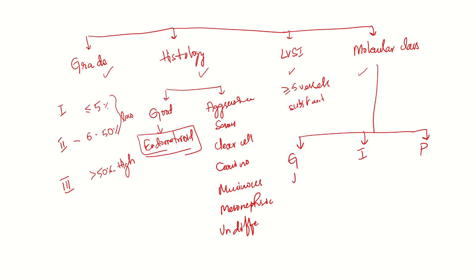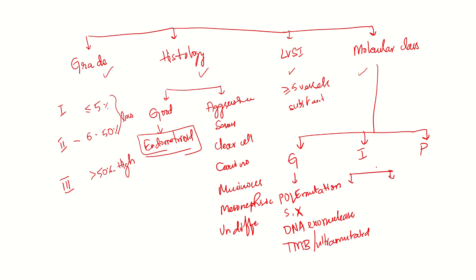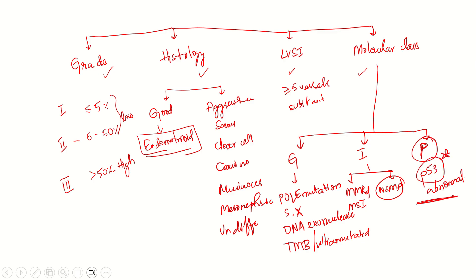In the good prognosis group, POLE mutations come under good molecular classification. These have somatic inactivating mutations in the DNA exonuclease domain, exceptionally high tumor burden, and are also called ultra-mutated variants. The intermediate group includes MMR-deficient tumors, microsatellite instability tumors, and no specific molecular profile groups. In the poor prognosis group, p53 abnormal mutations are considered poor prognosis.